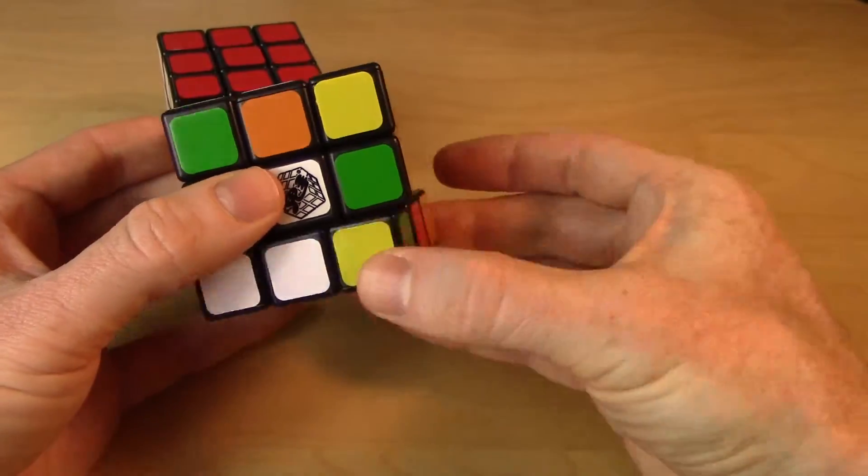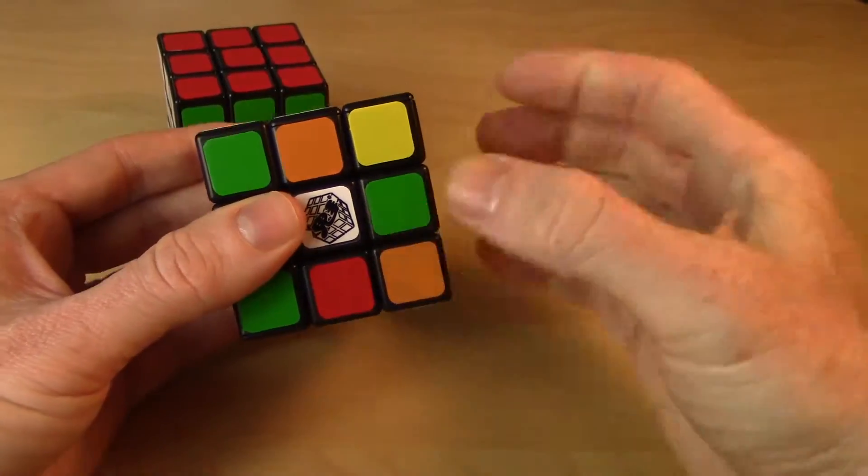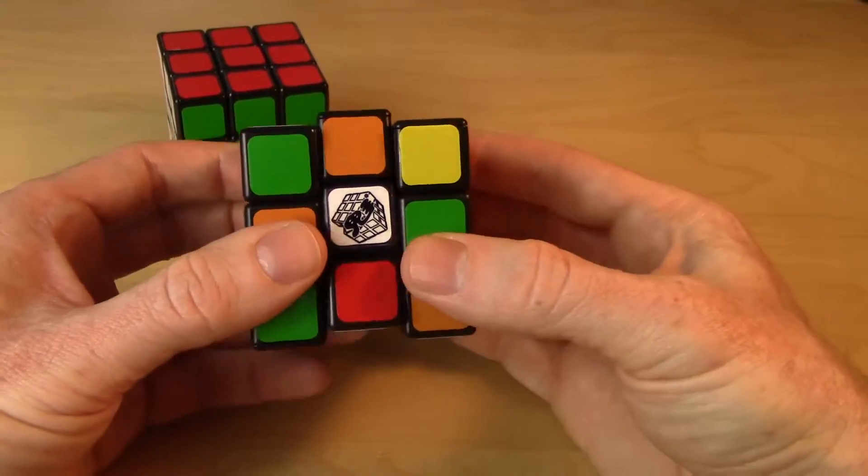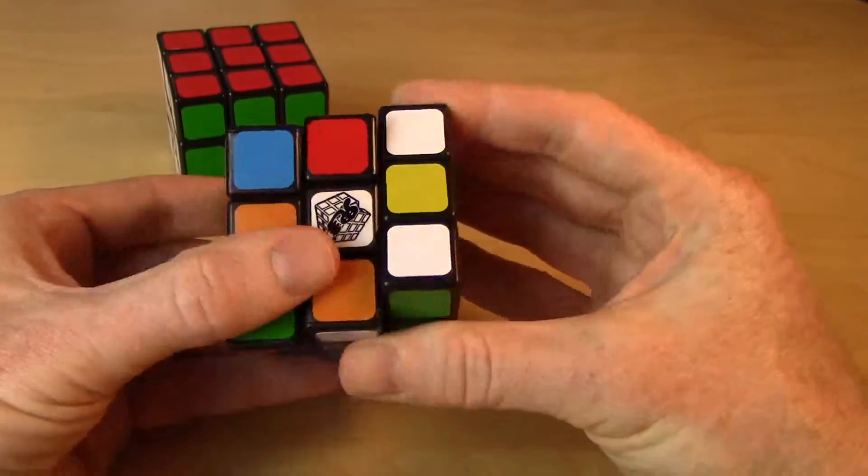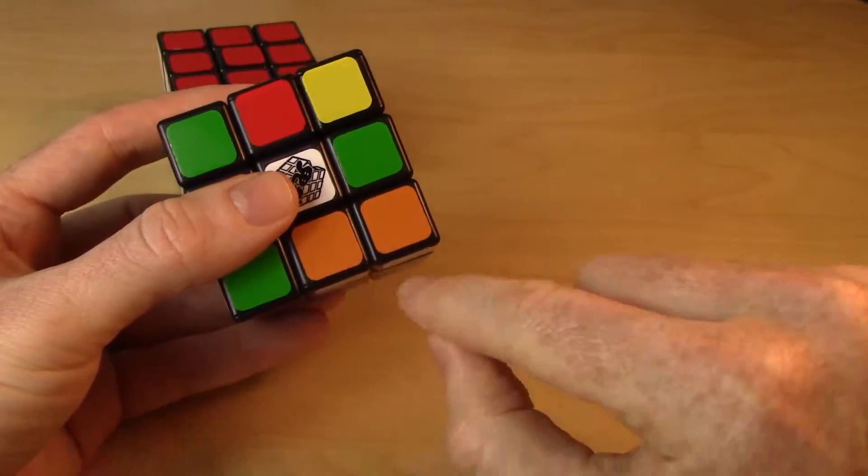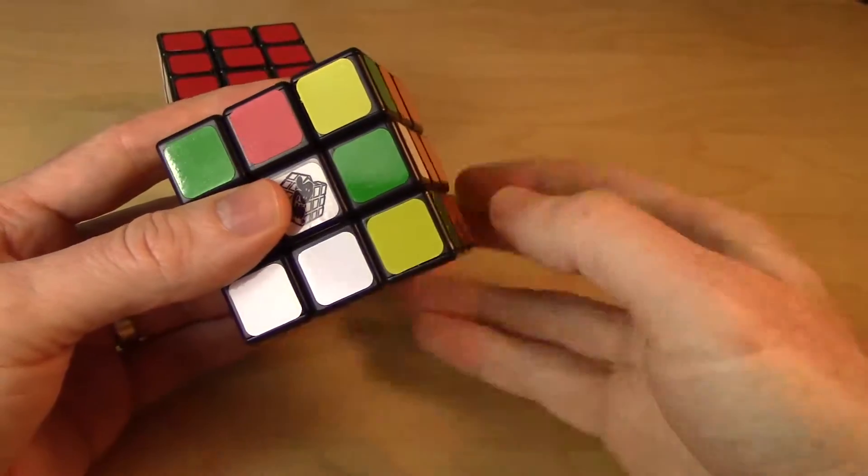So I will twist and bring that piece here. And now I will do the 3-cycle. And then put it back there by undoing that setup move.